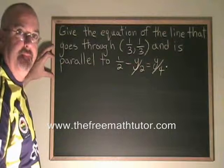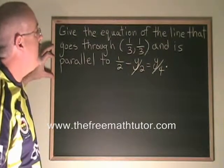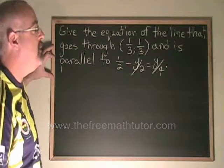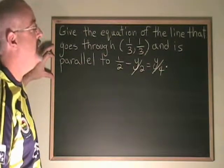Here's another example. Give the equation of the line that goes through one-third, one-third, and is parallel to the line one-half minus y over 2 equals y over 4.